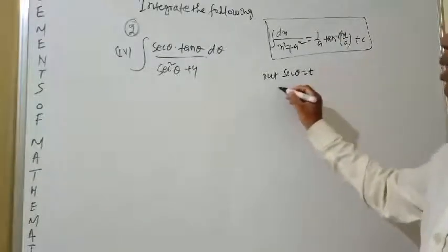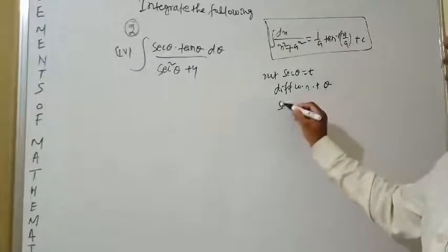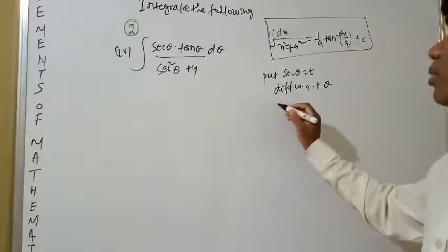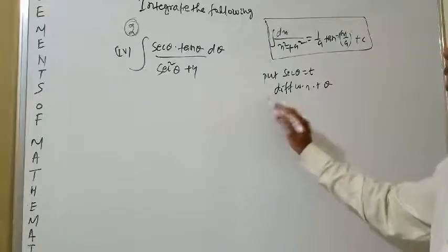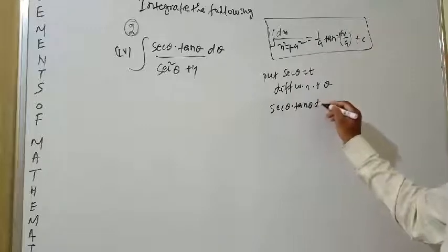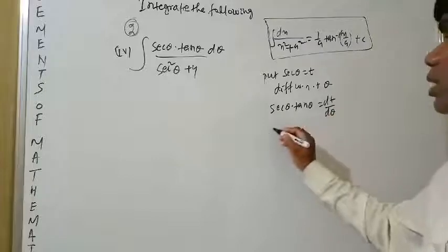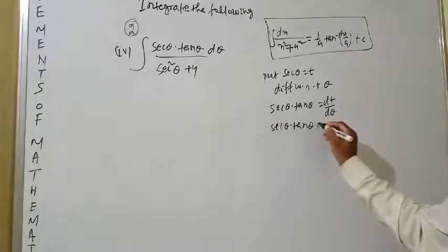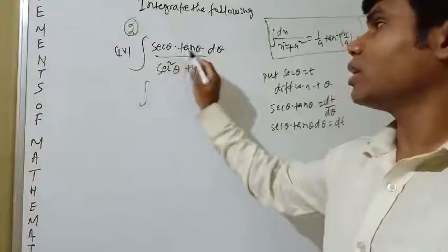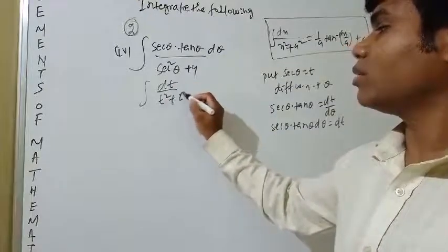Differentiating sec θ = t gives sec θ × tan θ dθ = dt. Substituting, the integral becomes ∫dt / (t² + 4), where 4 = 2².